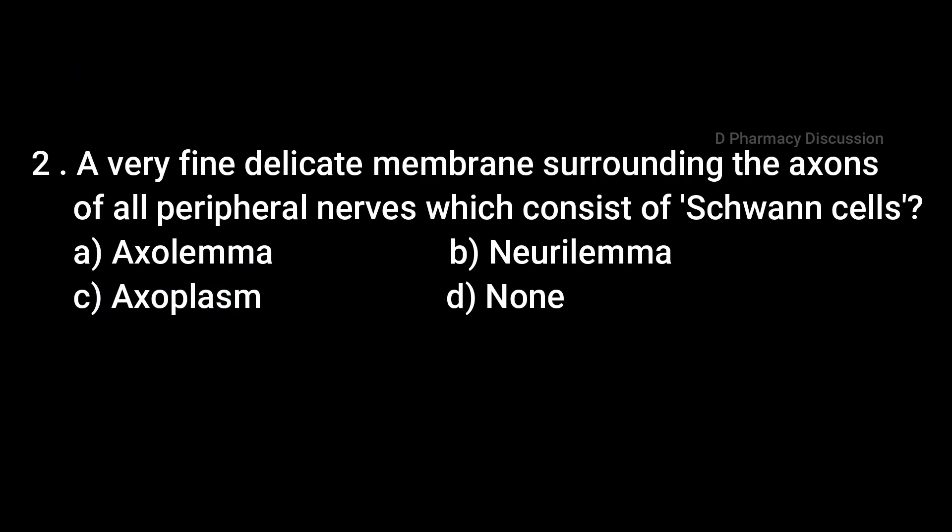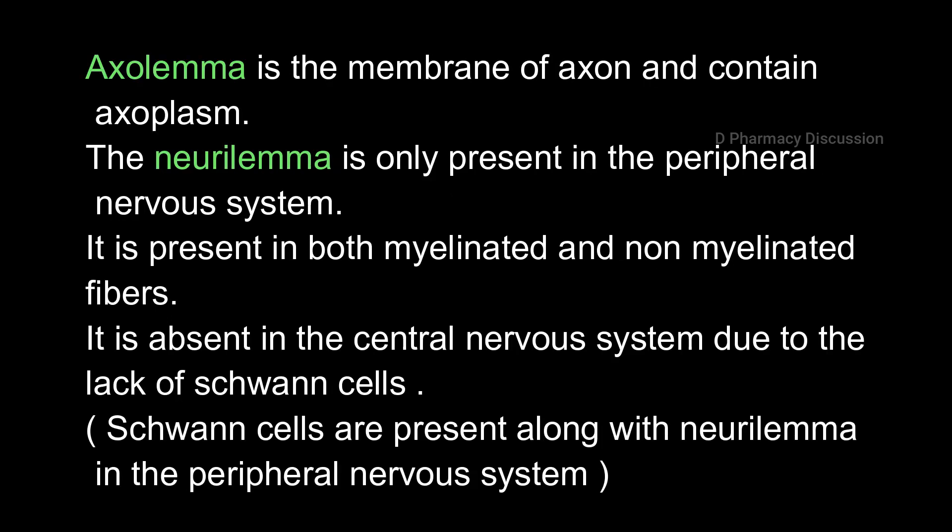Question 2: A very fine, delicate membrane surrounding the axons of all peripheral nerves which consists of Schwann cells. Options: A: Oxolemma, B: Neurylemma, C: Oxoplasm, D: None. Correct answer is Option B: Neurylemma. Oxylemma is a membrane of the axon and contains oxoplasm. Neurylemma is only present in the peripheral nervous system, in both myelinated and non-myelinated fibers, and is absent in the central nervous system due to the lack of Schwann cells.